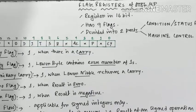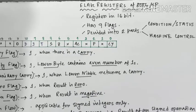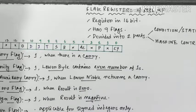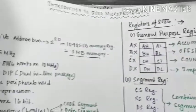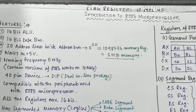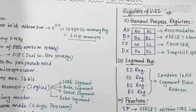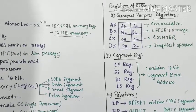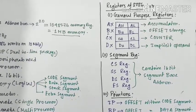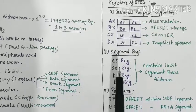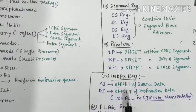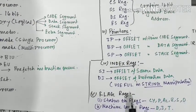Welcome. In this video we are going to explain the function of the flag registers of the 8086 microprocessor. In a previous video we explained the basic features of the 8086 microprocessor including all its registers. The registers of 8086 can be divided into five different groups: general purpose registers, segment registers, pointers, index registers, and the flag register.